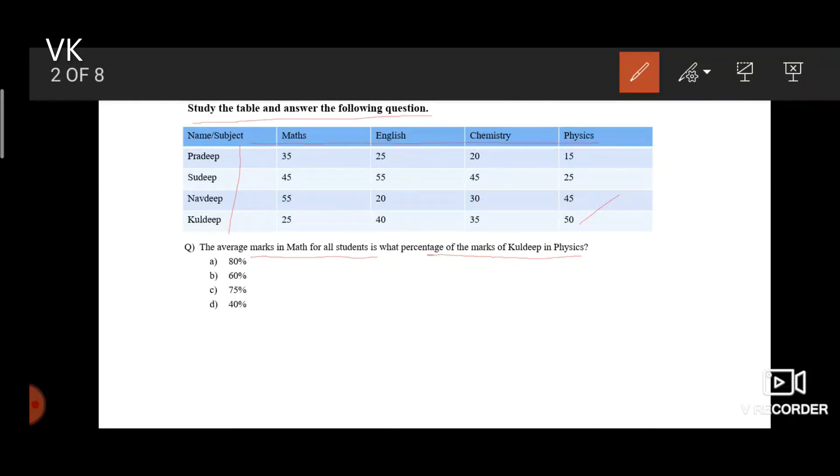We all know that average is sum of the observations by number of the observations. So considering the marks of all the students in maths, 55, 45, 100 plus 35, 135 plus 25, 160. This gives us 40 which is the average marks in maths for all the students.